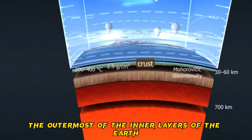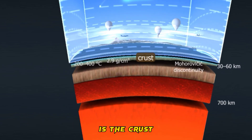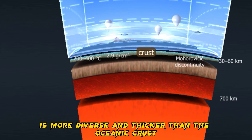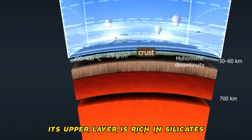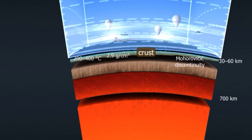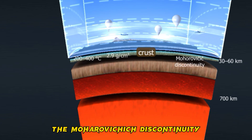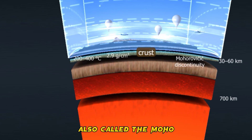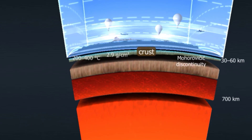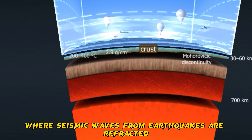The outermost of the inner layers of the Earth is the crust. The composition of the continental crust is more diverse and thicker than the oceanic crust. Its upper layer is rich in silicates, while its lower layer consists of higher density rocks rich in metals. The Mohorovicic discontinuity, also called the Moho, is a boundary located between the crust and the mantle, where seismic waves from earthquakes are refracted.